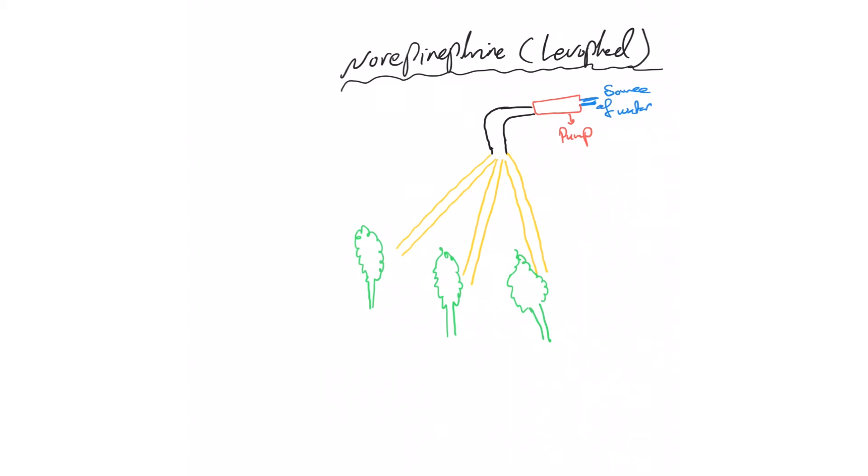Remember the example of the source of water, a pump, and hoses to the trees. Basically levofed works by affecting two parts of the system. First it works here on these hoses and makes their diameter smaller, narrower, which we call vasoconstriction, and it has really a strong vasoconstrictive effect.